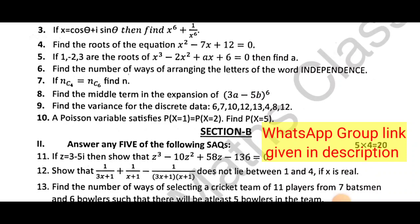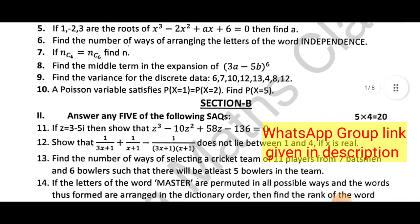Eighth question is middle term find. Ninth question is variance - measures of dispersion. Three problems: find the variance, mean deviation about mean, mean deviation about median. These three natures definitely have two markers. Tenth question is Poisson variable.